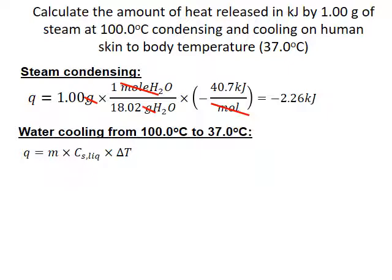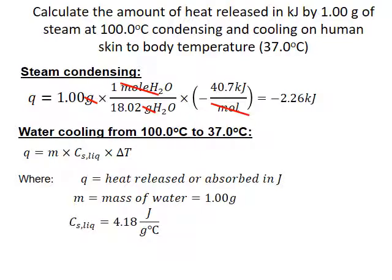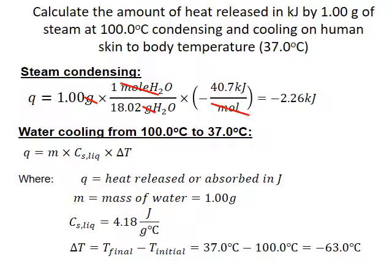To calculate the heat released by water cooling from 100 to 37 degrees Celsius, we need to do a specific heat capacity calculation. The formula for this is Q equals M times C-sub-S times delta T, where Q equals the heat released or absorbed in joules, M is the mass of the substance in grams, and C-sub-S is the specific heat capacity of the substance — in this case liquid water. Delta T is the temperature change of water, calculated as final temperature minus initial. In this case, the final temperature was 37 degrees Celsius and the initial was 100 degrees Celsius, giving a temperature change of negative 63 degrees Celsius.